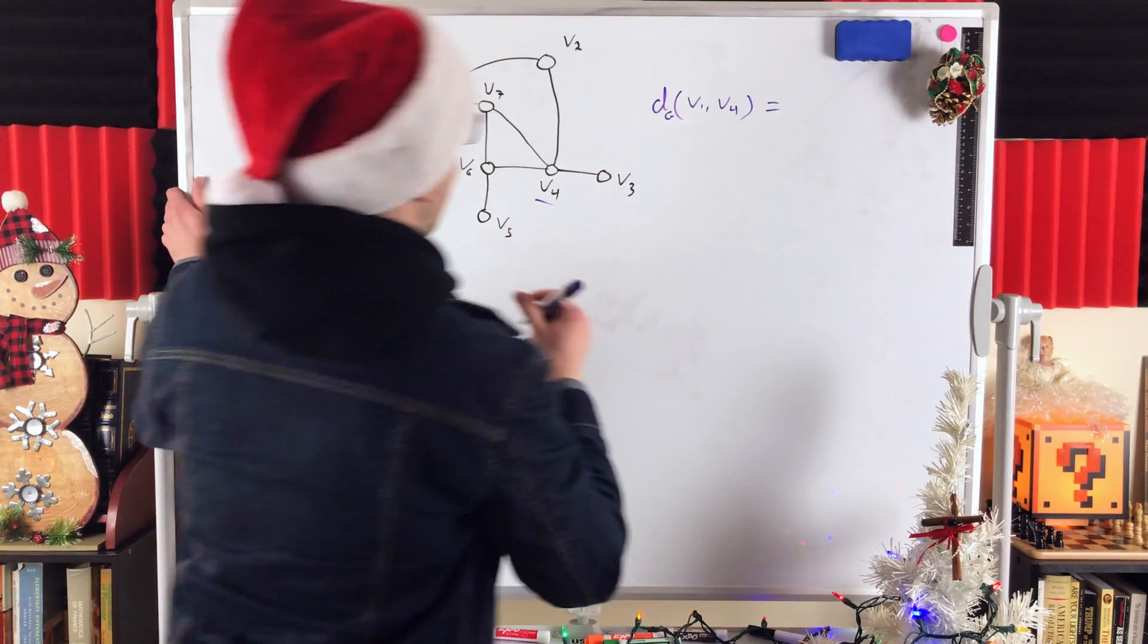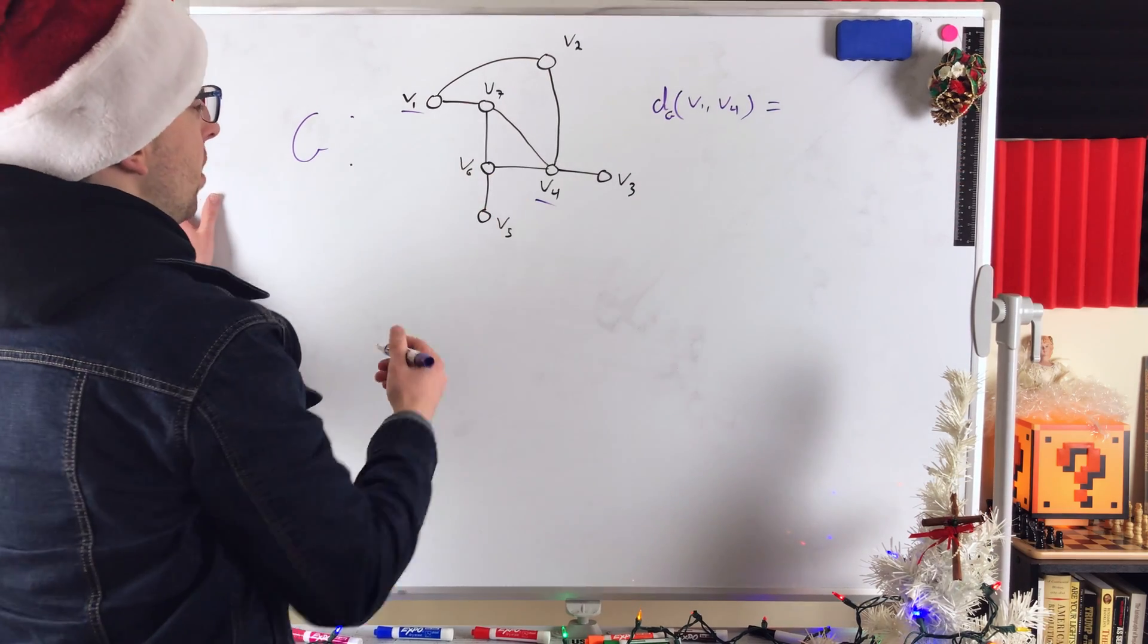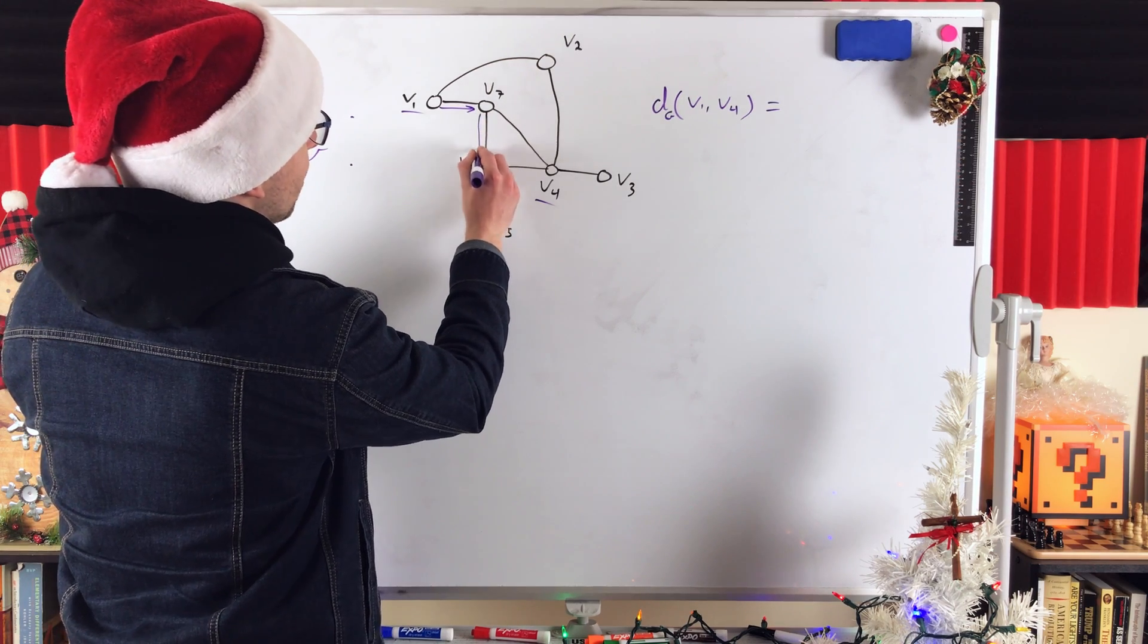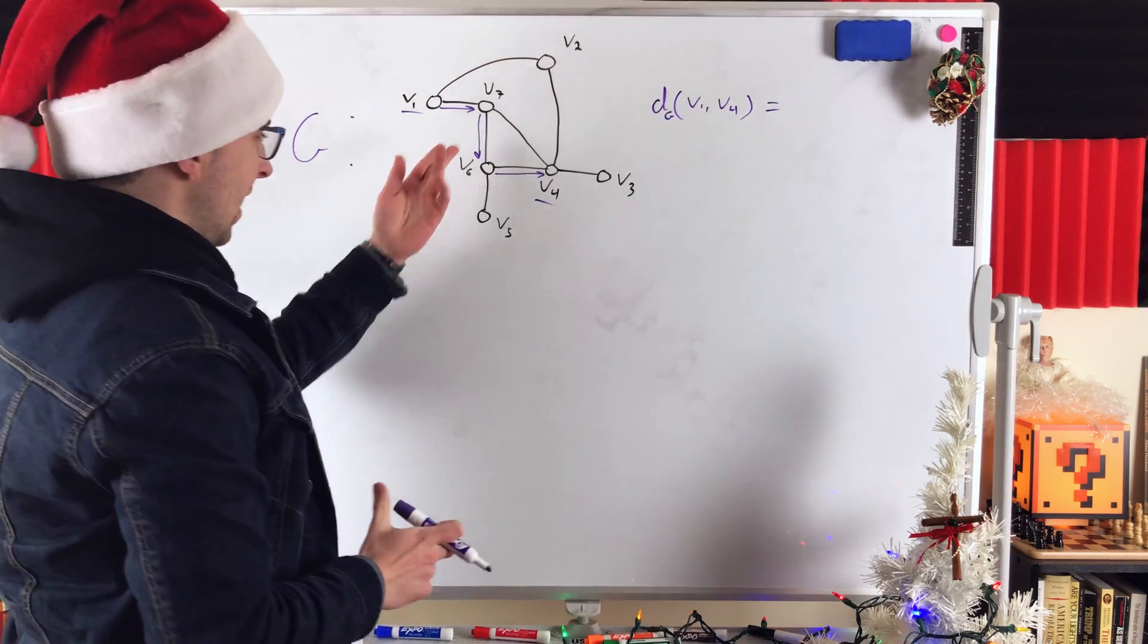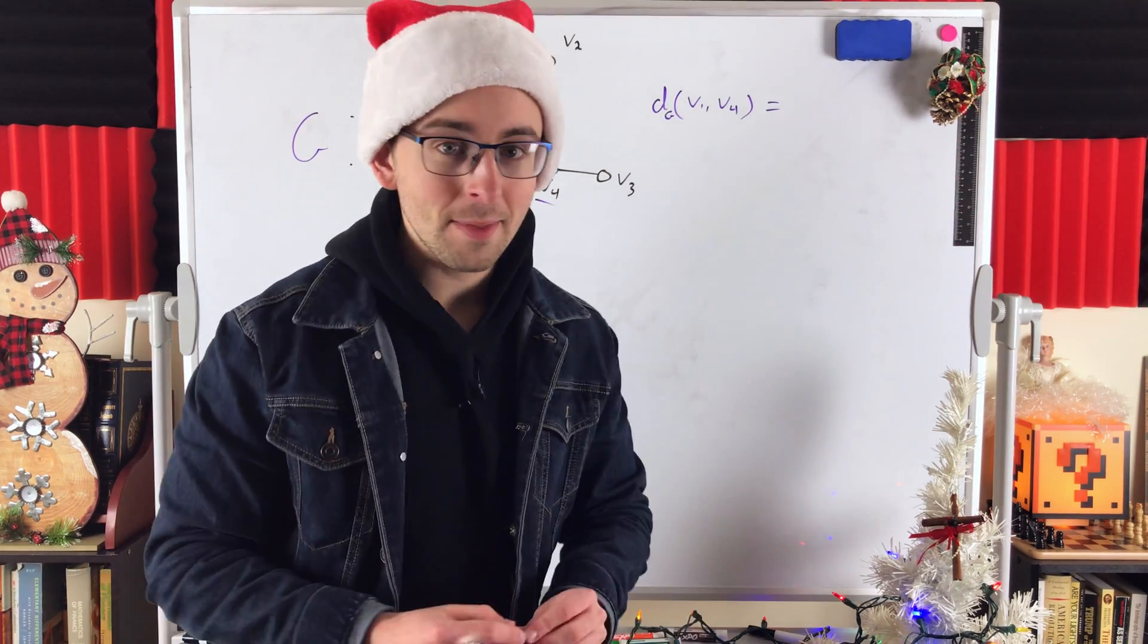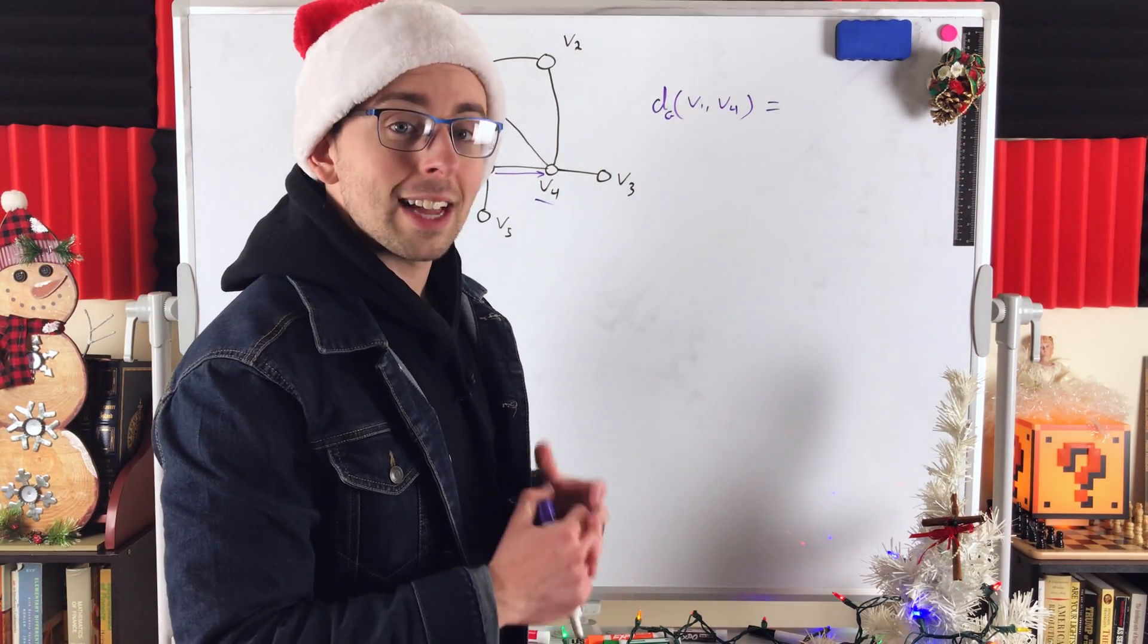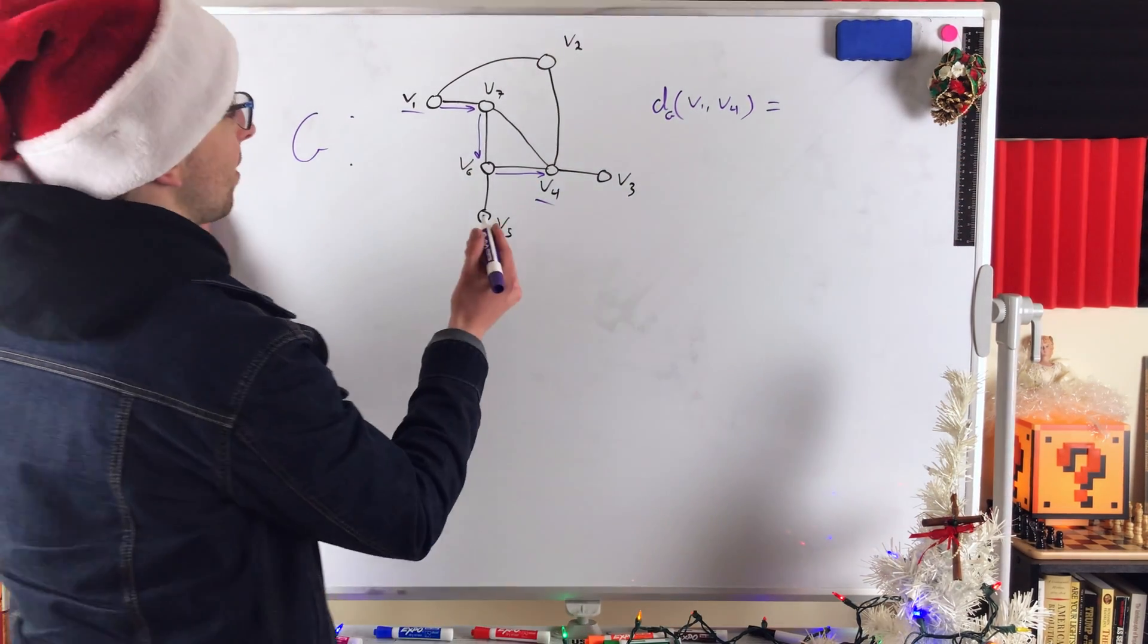Now, what's the distance between V1 and V4? Well, we see we can get from V1 to V4 like this. We could go from V1 to V7, then to V6, and then to V4. There's a path connecting V1 to V4 that has length 3. Is the distance 3? No, it is not. The reason the distance between V1 and V4 isn't 3 is because that's not the shortest path, or that's not the length of the shortest path to get from one vertex to the other.